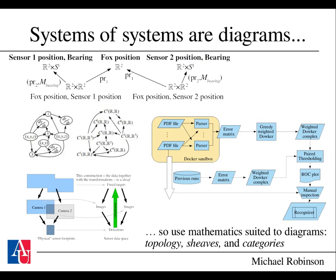All of this talk is based on the idea that systems of systems are best described by diagrams — directed graphs in which the nodes are labeled with spaces of possible values and the edges are labeled with functions. Given this insight, and that systems engineers like to draw diagrams to describe their systems, it is best to use the mathematics suited to diagrams: that is topology, sheaves, and categories.